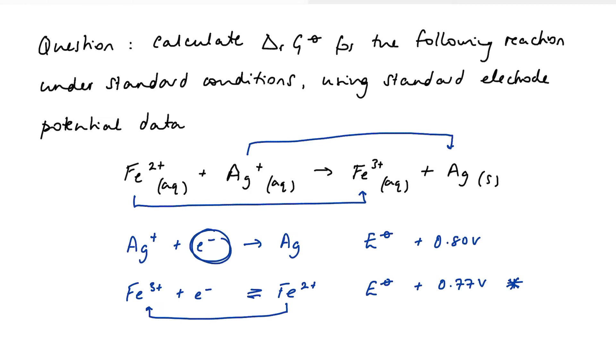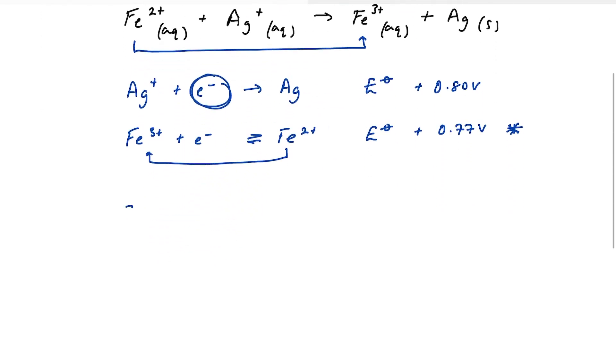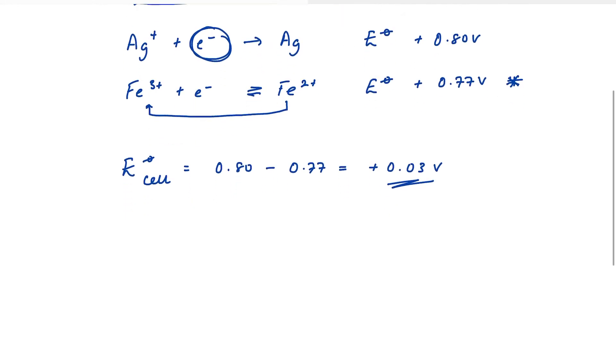The standard electrode potential for that one is 0.77 volts. So that tells me that because the iron two, iron three half cell has a slightly less positive electrode potential, it is the oxidation half cell and Fe²⁺ is going to be oxidized to Fe³⁺. I also can see that one mole of electrons is transferred. So the first thing to do is to calculate E cell. E cell is the more positive electrode potential take away the less positive, which in this case is 0.80 take away plus 0.77, which comes out to be plus 0.03 volts. So E cell is telling me that this reaction is feasible because I have a positive value.